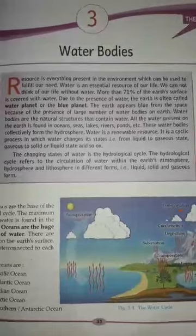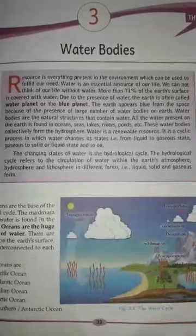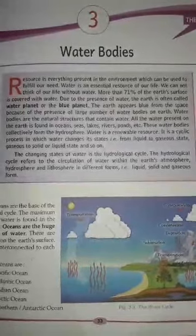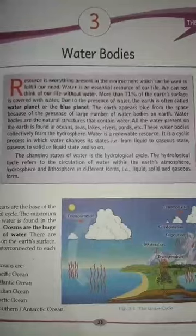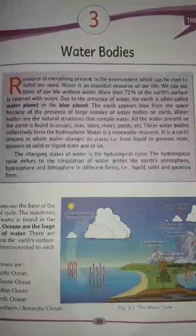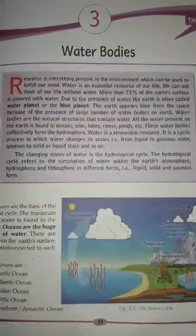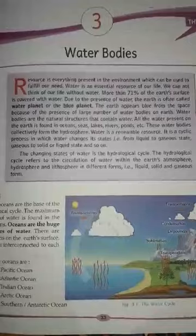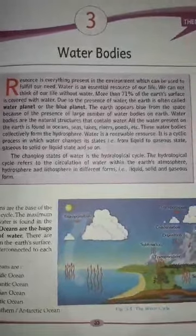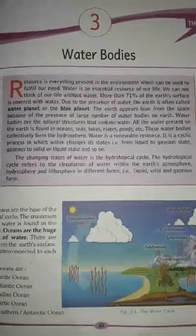The earth's hydrosphere consists of water on and below the surface of the earth. The oceans account for 71 percent of the earth. Unlike continents, all oceans and seas are interconnected. The changing states of water is the hydrological cycle. It refers to the circulation of water within the earth's atmosphere, hydrosphere and lithosphere in different forms, i.e. liquid, solid and gaseous state.